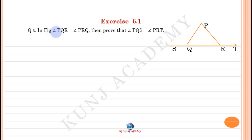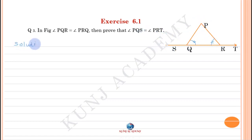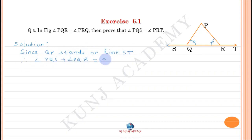In the figure, angle PQR equals angle PRQ. Prove that angle PQS equals angle PRT. Since ray QP stands on line ST, therefore angle PQS plus angle PQR equals 180 degrees (linear pair). Similarly, since RP stands on line ST, therefore angle PRT plus angle PRQ equals 180 degrees (linear pair).